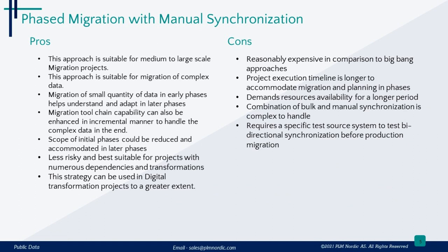Comparing the phased migration with manual synchronization approach to the Big Bang migration approach: the phased approach is well-suited for medium- to large-scale migration projects and is effective for migrating complex data with intricate data structures. Migrating a small amount of data in early phases allows for better understanding and adaptation in later stages. The scope of initial phases can be adjusted and accommodated in later phases, providing flexibility. This approach is also less risky, making it ideal for projects with numerous dependencies and transformations, and is well-suited for digital transformation projects.